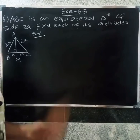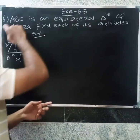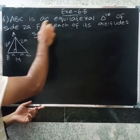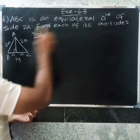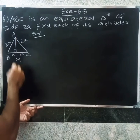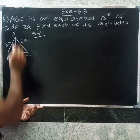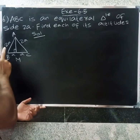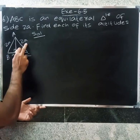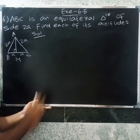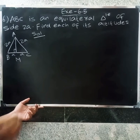Welcome friends. Now we have the 6th question. ABC is a rectangular triangle of side 2A. Find each of its altitudes.